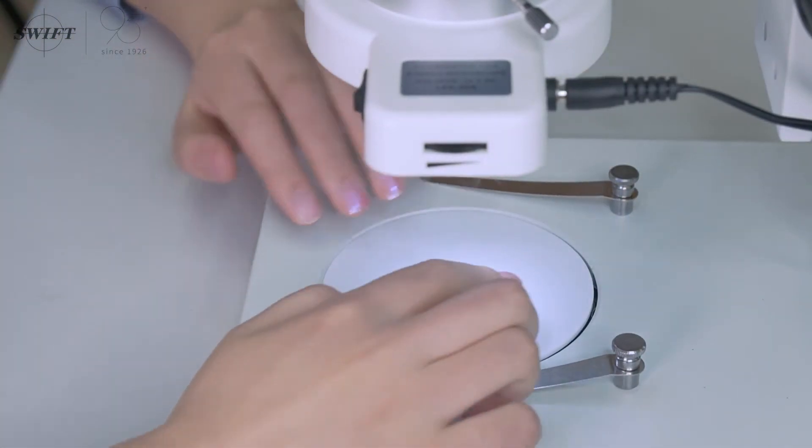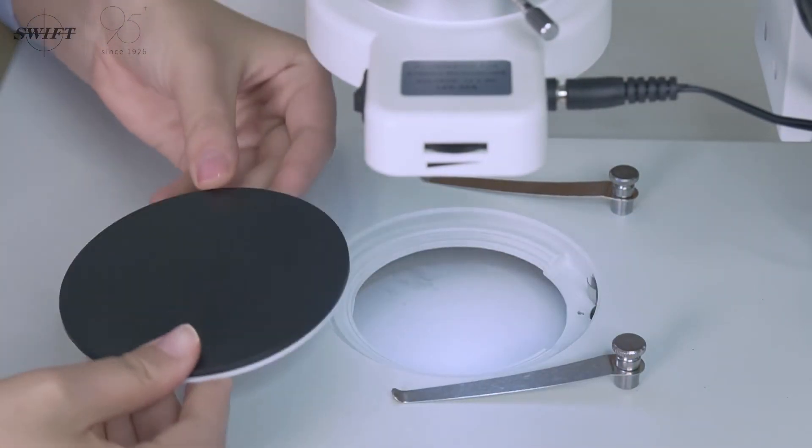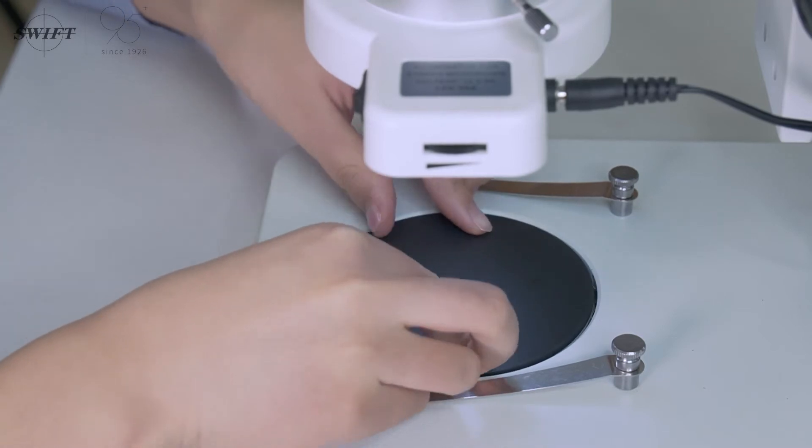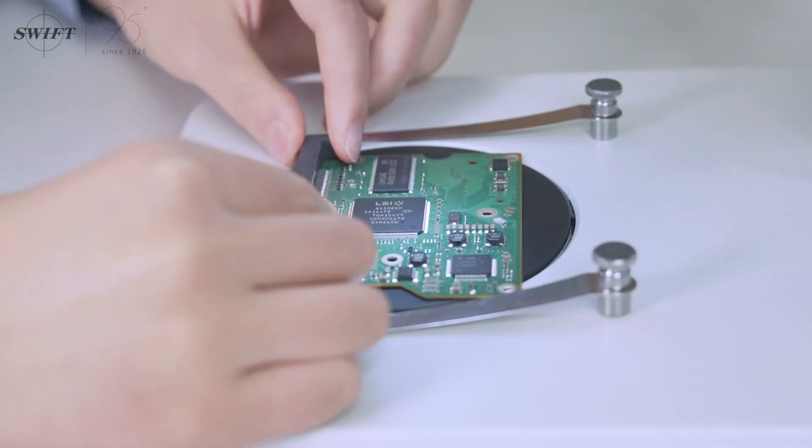Connect the power supply and turn on the power switch. Select the appropriate work surface according to the needs of observing the sample. Place the sample circuit board.